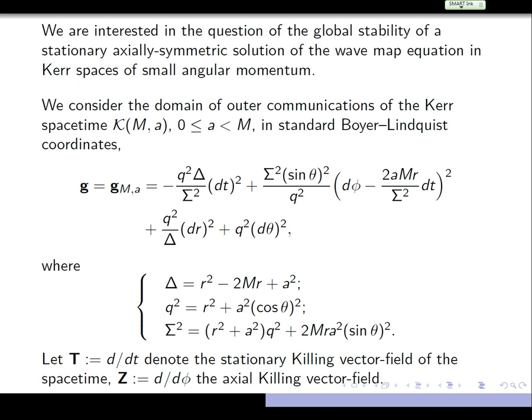We have a metric that depends on two parameters: the parameter M, which is the mass of the black hole — it's a black hole solution of the Einstein vacuum equations — and the parameter A, which is the angular momentum. The metric itself is an explicit metric.